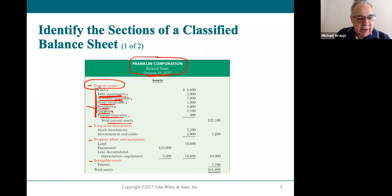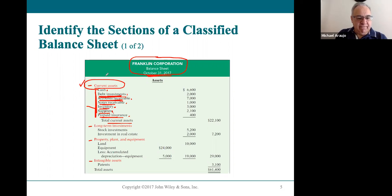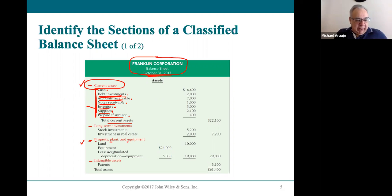That's why these are all current assets — they're either going to be turned into cash within a year or used up within a year. This is probably the biggest part of every balance sheet. Moving to property, plant, and equipment: land, building, equipment — that's usually how they're listed on a balance sheet, with land listed first.